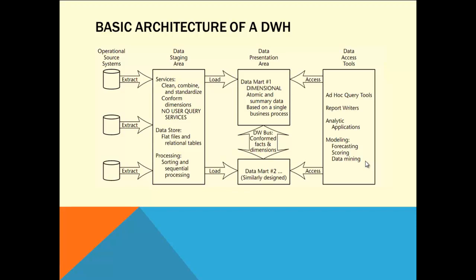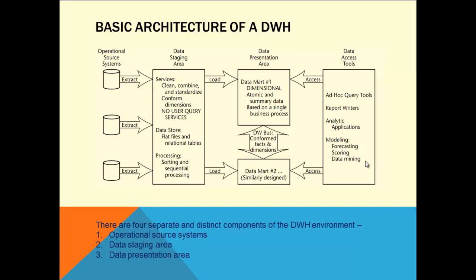We will see in depth each area in this bus architecture — crystal clear in a very neat fashion. There are four separate and distinct components of the data warehouse environment. The first is operational source systems. The second is data staging area. The third is data presentation area. The fourth is data access tools — there are certain tools which can access this data finally. These are the four areas in the basic architecture of a data warehouse.